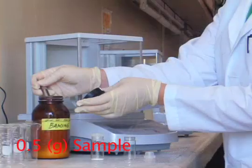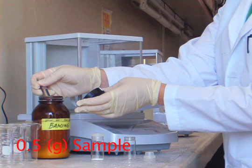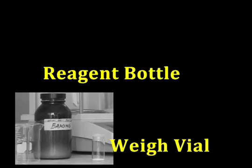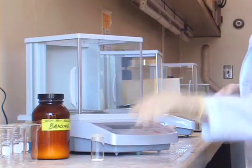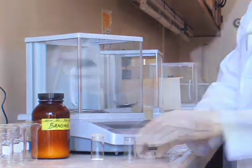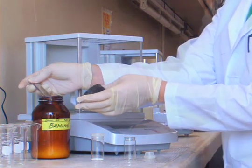Let's say that your experiment calls for two 0.5 gram samples of our solid, each in a 150 ml beaker. Using the sample weighing vial next to the reagent bottle as a guide, place a similar amount of solid onto your own weighing vial.